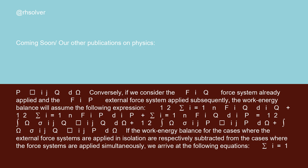Conversely, if we consider the F_iQ force system already applied and the F_iP external force system applied subsequently, the work-energy balance will assume the following expression: (1/2) Σ(i=1 to N) F_iQ · D_iQ + (1/2) Σ(i=1 to N) F_iP · D_iP + Σ(i=1 to N) F_iQ · D_iP = (1/2) ∫_Ω σ_ijQ · ε_ijQ dΩ + (1/2) ∫_Ω σ_ijP · ε_ijP dΩ + ∫_Ω σ_ijQ · ε_ijP dΩ.